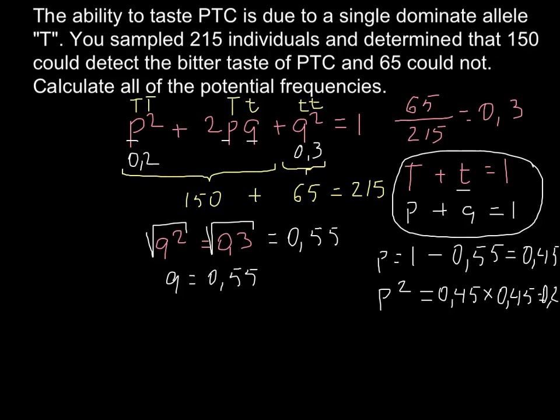And now we have to finish this part of the formula. So we know p, we know q. So we have to multiply 2 by p, and p is 0.45. And we have to multiply by q. And we know that q is 0.55. So if we multiply these numbers, we are going to get 0.5. This is also a rounded number.